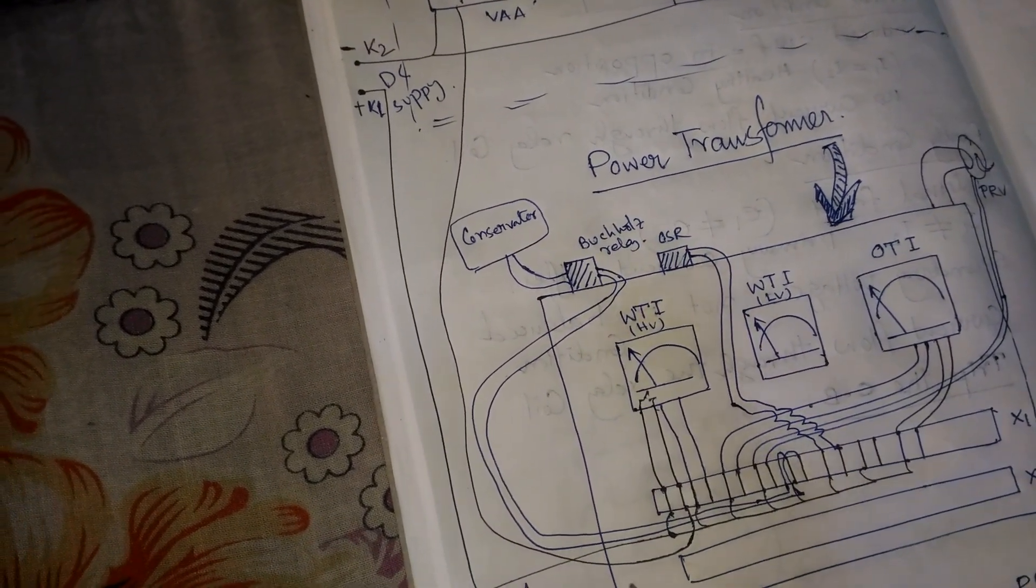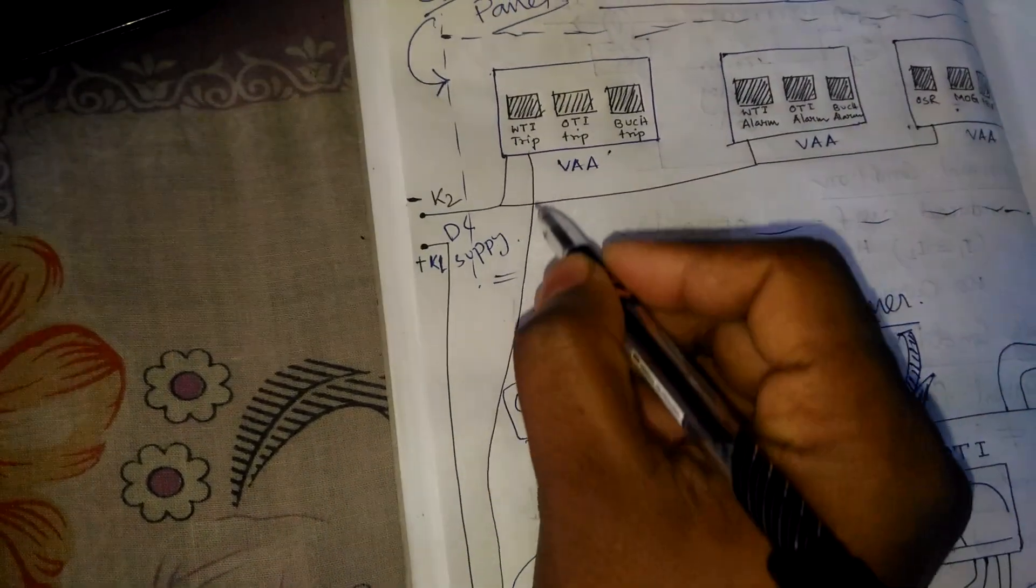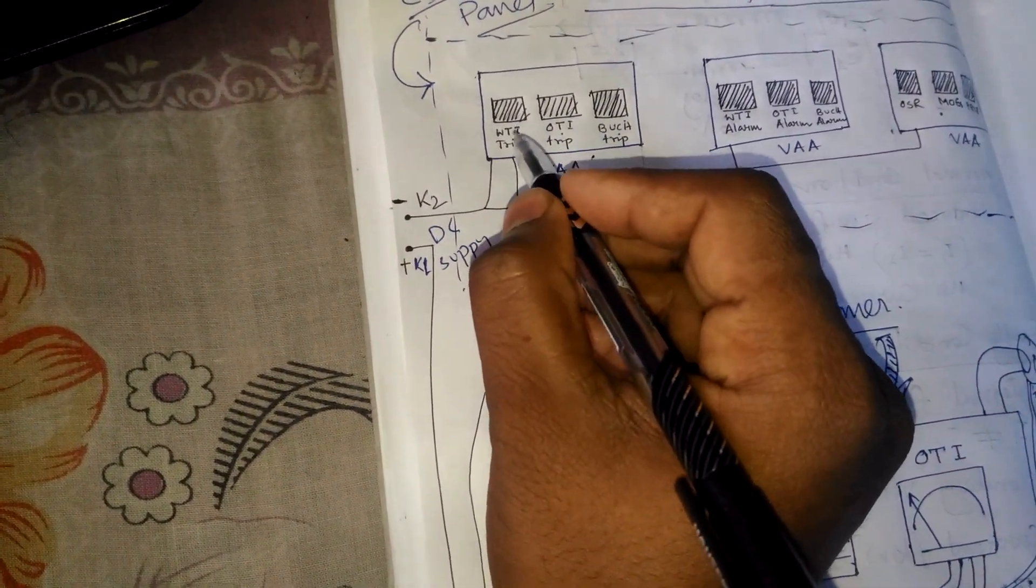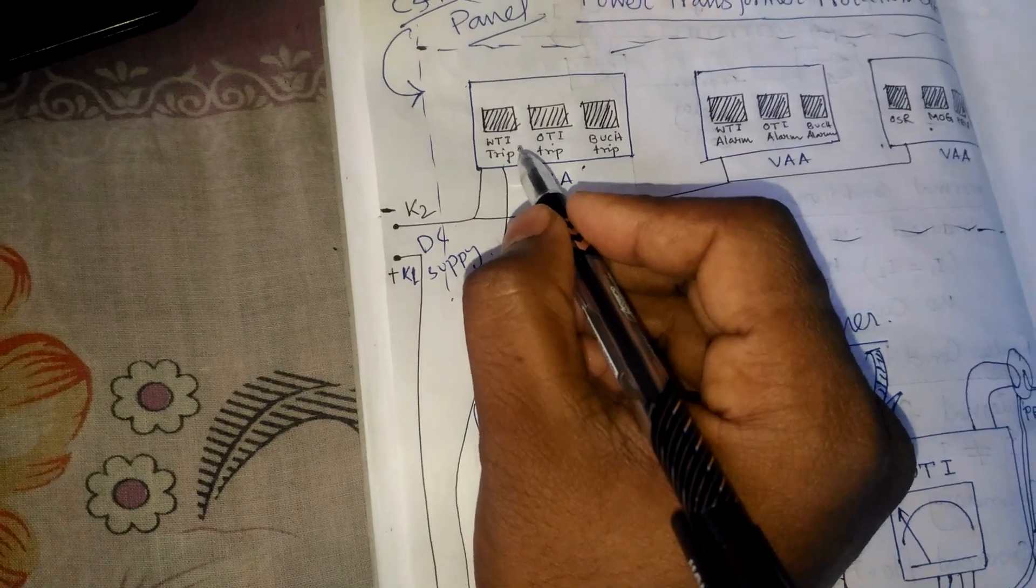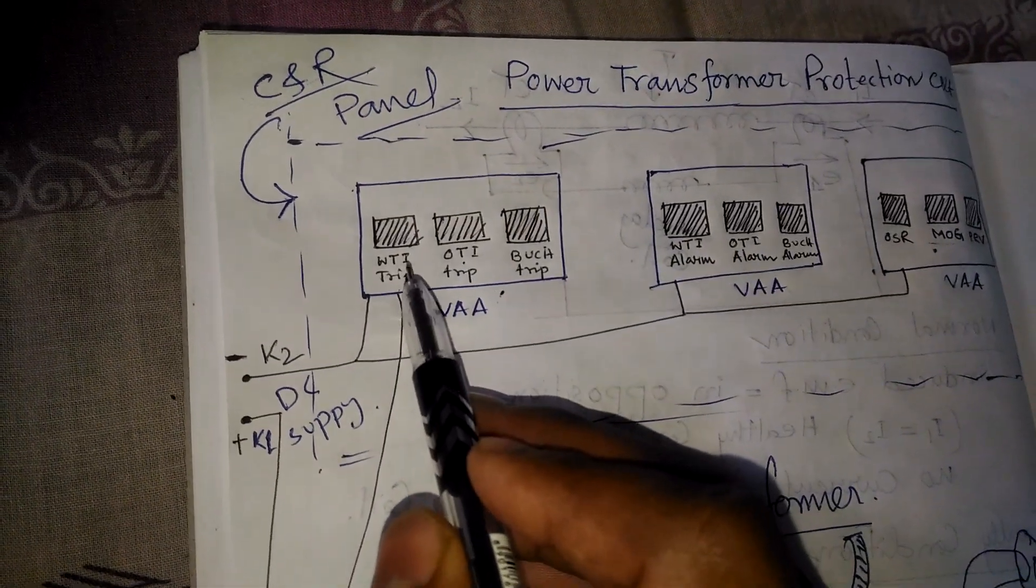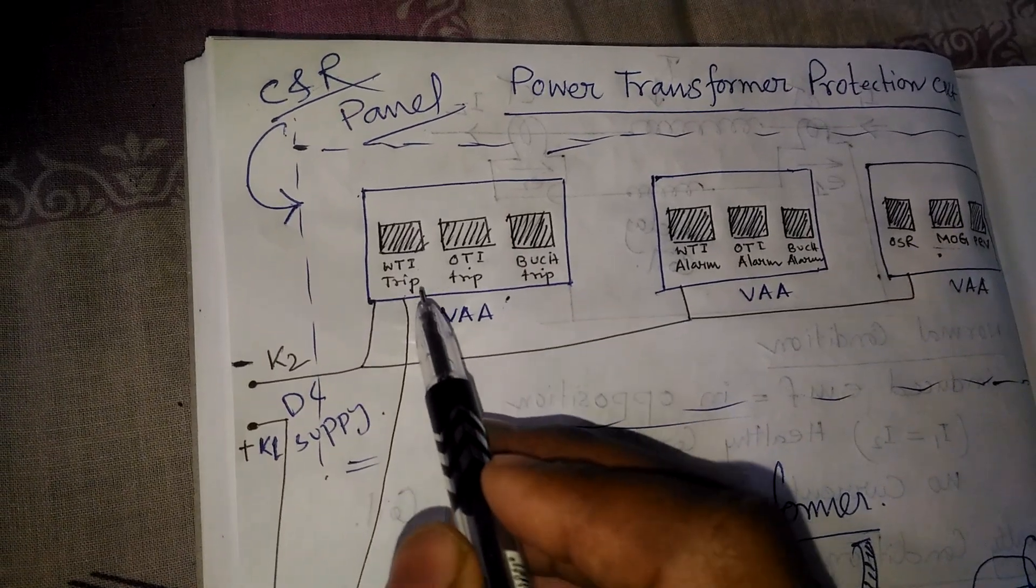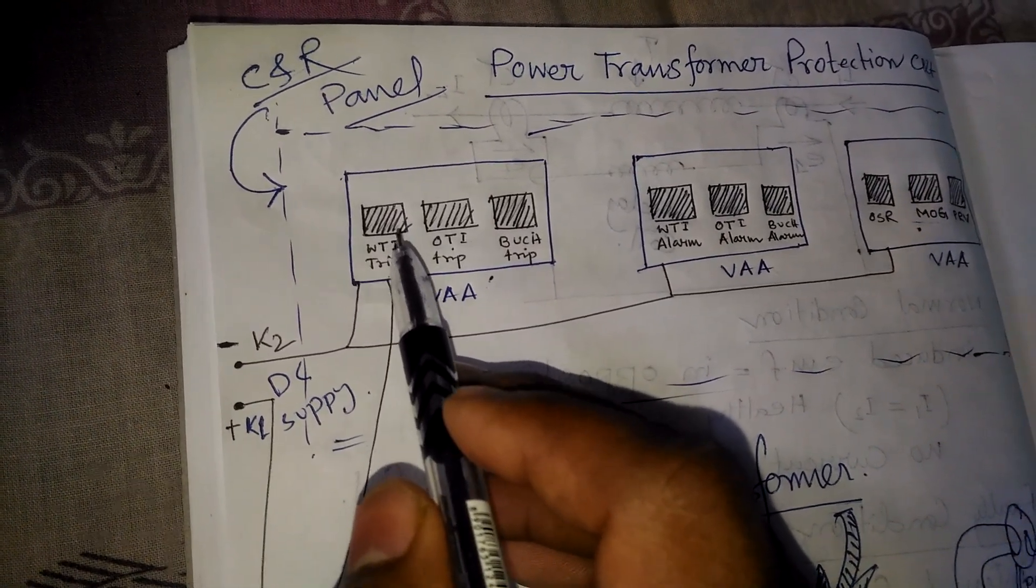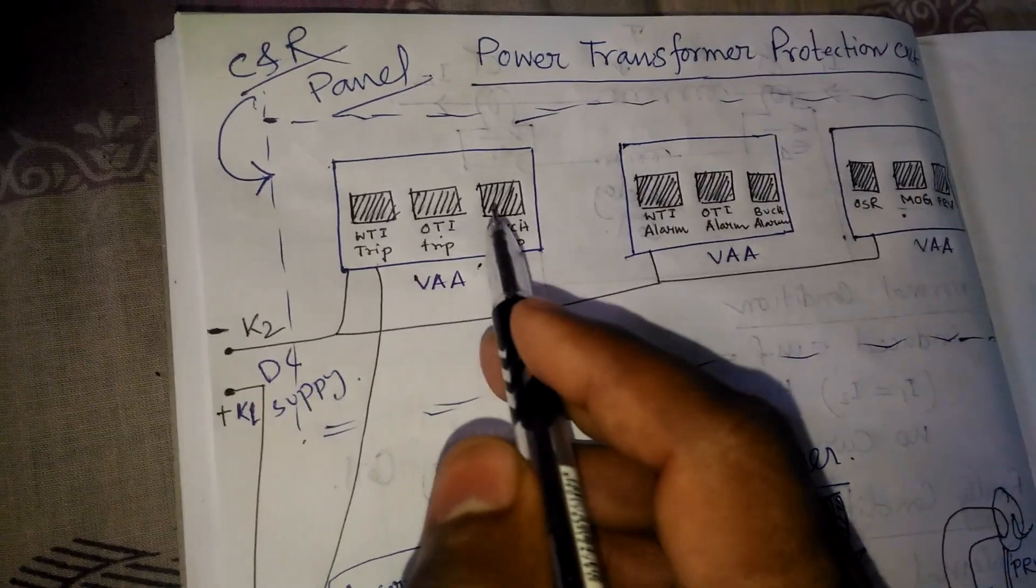If this is NC contact, then the positive is back from this path and this relay coil will be energized. So the operators from the control room can understand that the WTI tripped and the transformer is tripped.